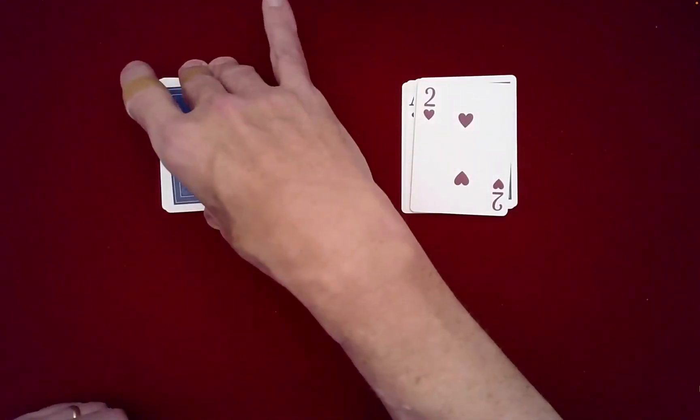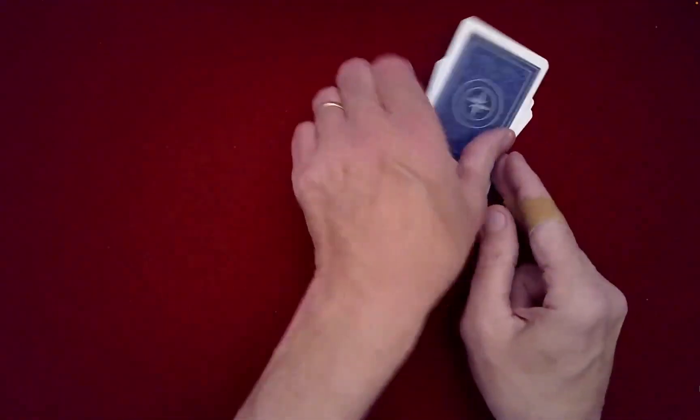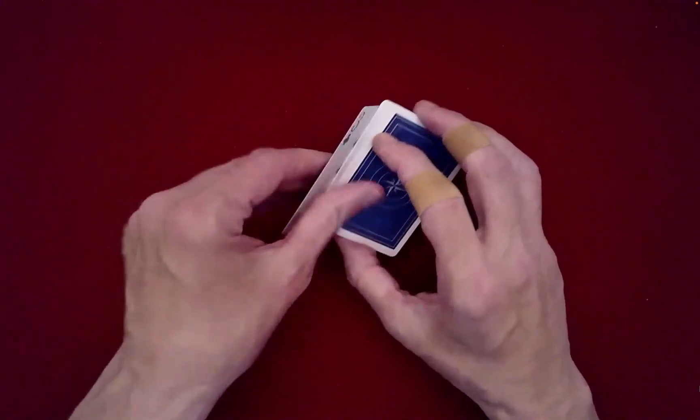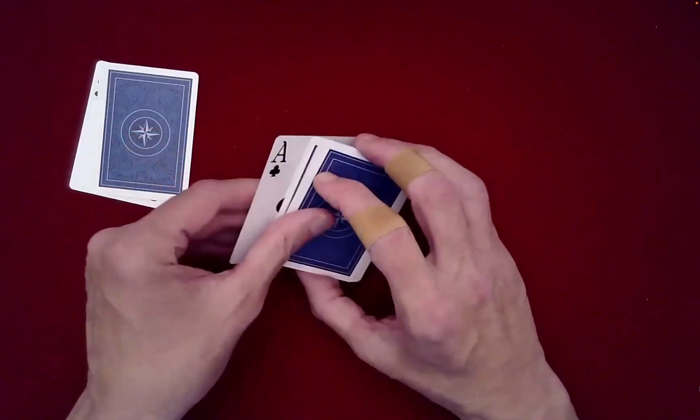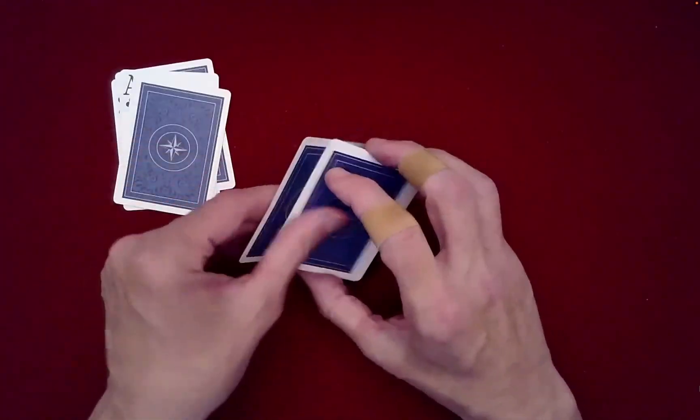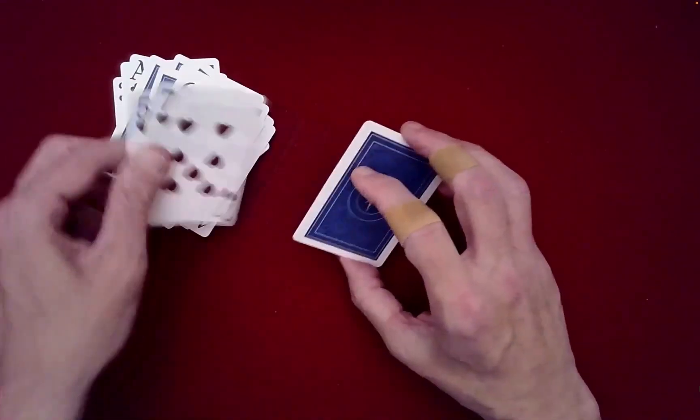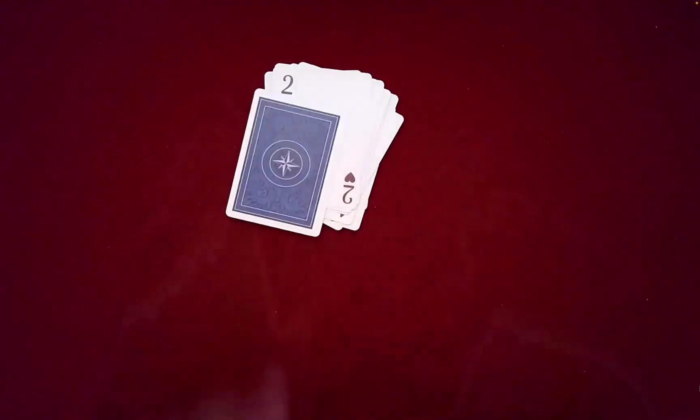And then we're going to randomly stack these again. And then perform one more Klondike Shuffle. One more Klondike Shuffle. Here we go. This is where you take the top and bottom off as one. Very good.